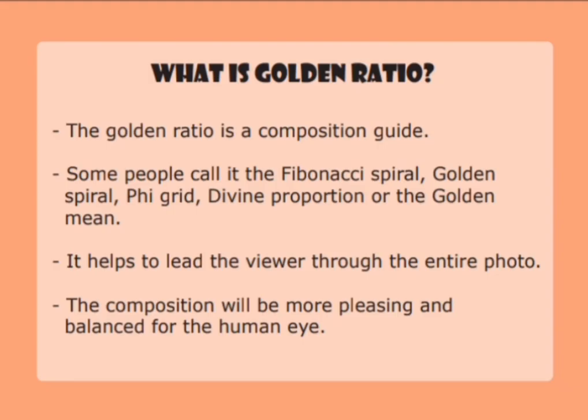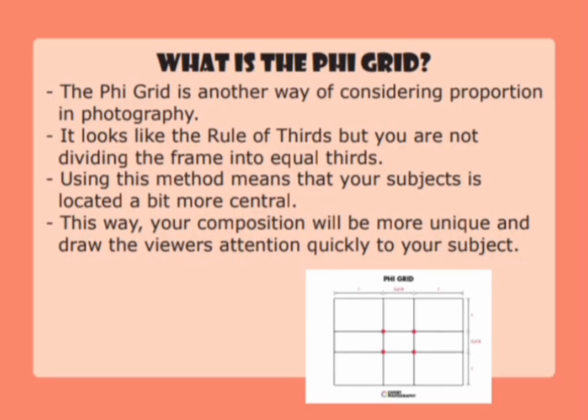What is the golden ratio? The golden ratio is a composition guide. Some people call it the Fibonacci spiral, golden spiral, phi grid, divine proportion or the golden mean. It helps to lead the viewer through the entire photo, making the composition more pleasing and balanced for the human eye. The phi grid is another way of considering proportion in photography. It looks like the rule of thirds but you are not dividing the frame into equal thirds. Using this method means your subject is located a bit more central, making your composition more unique and drawing the viewer's attention quickly to your subject.